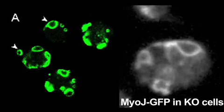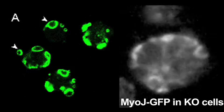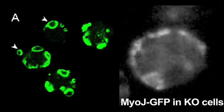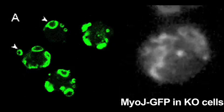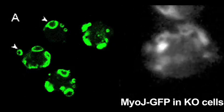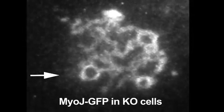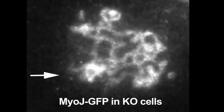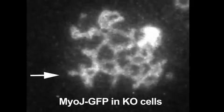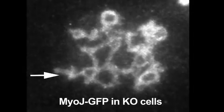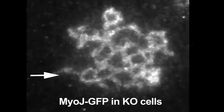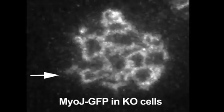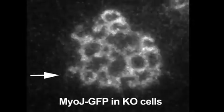This suggested that myo-J captures contractile vacuoles at the cell periphery by anchoring them to the actin cytoskeleton. Reintroducing a GFP-tagged version of myo-J to knockout cells restored the normal distribution of vacuole membranes. Moreover, rescued cells regained the ability to spread out their contractile vacuoles across the cell cortex after discharging water at the cell surface.